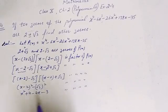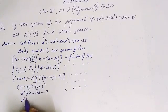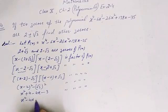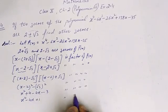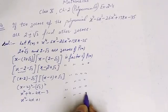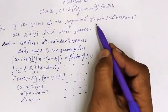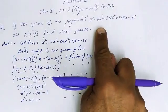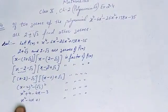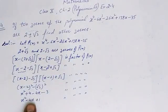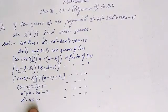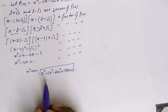When we divide p(x) by x² - 4x + 1, we will get remainder 0. So let's perform this division.